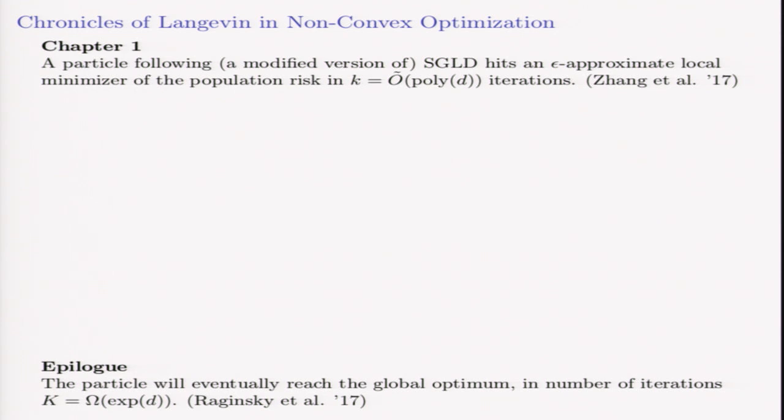A complementary result was given by Raginsky and friends, who showed that Langevin run long enough will eventually reach the global optimum after a number of iterations that is, in worst case, exponential in dimension.